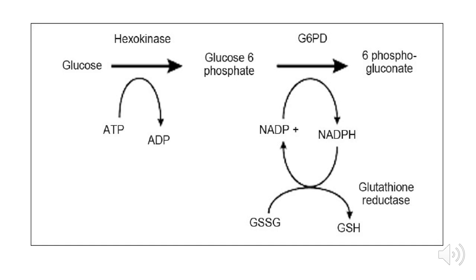Imagine people born with abnormal genes that encode for glucose 6-phosphate dehydrogenase. These people cannot express this enzyme, so they cannot produce NADPH and cannot reconvert oxidized glutathione to its reduced form. These individuals are therefore prone to the damaging effects of oxidizing agents. This condition is referred to as glucose 6-phosphate dehydrogenase deficiency.